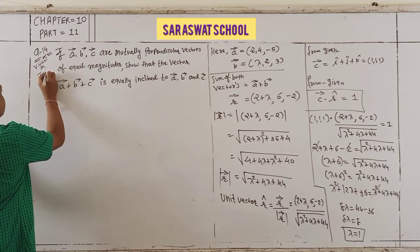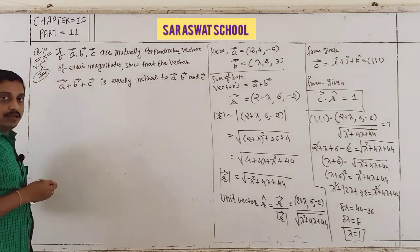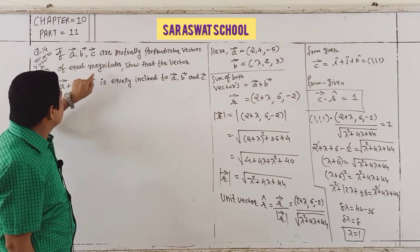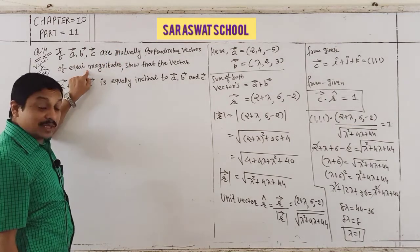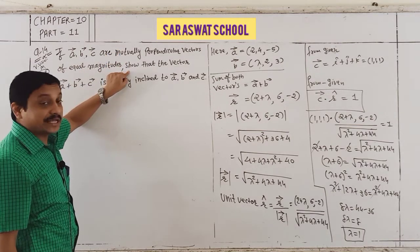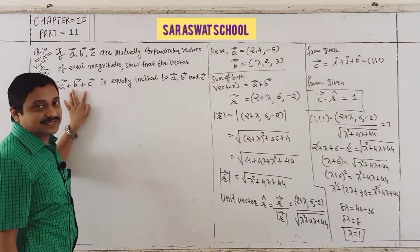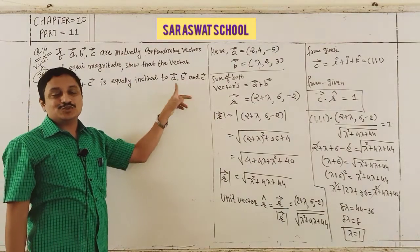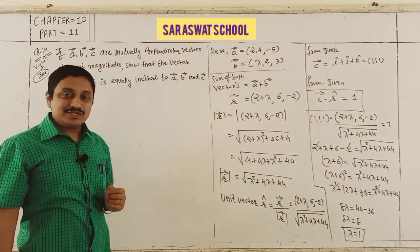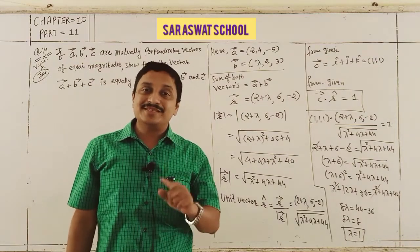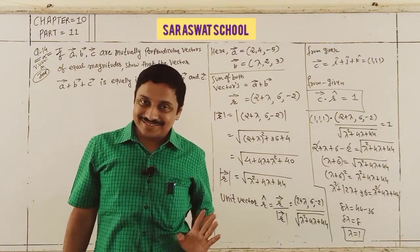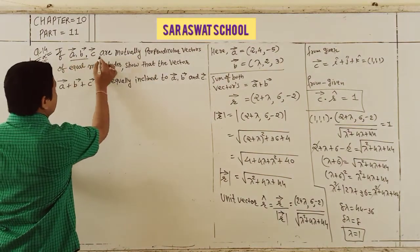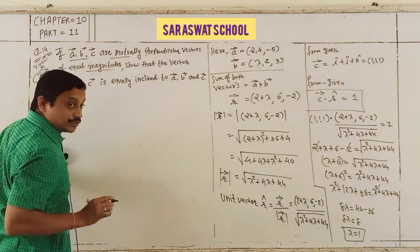Question 14: If A, B, C are mutually perpendicular vectors of equal magnitudes, show that A + B + C is equally inclined to A, B, and C.